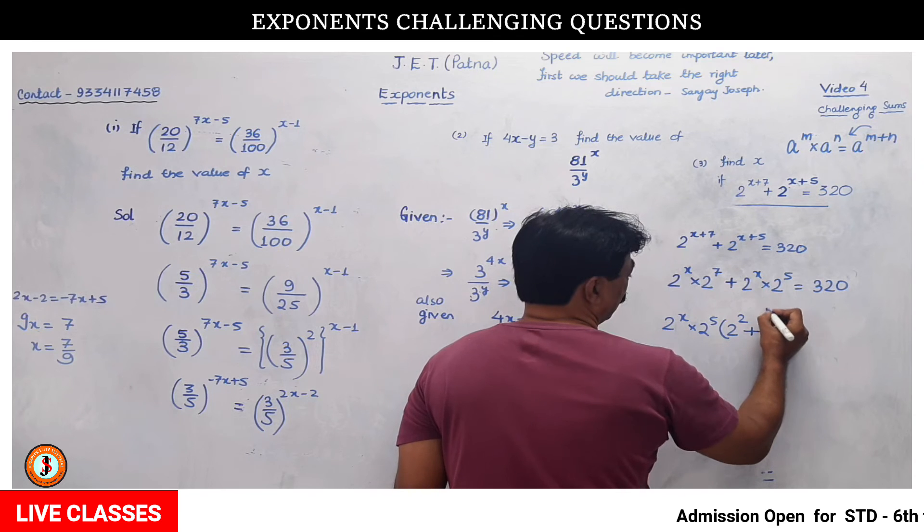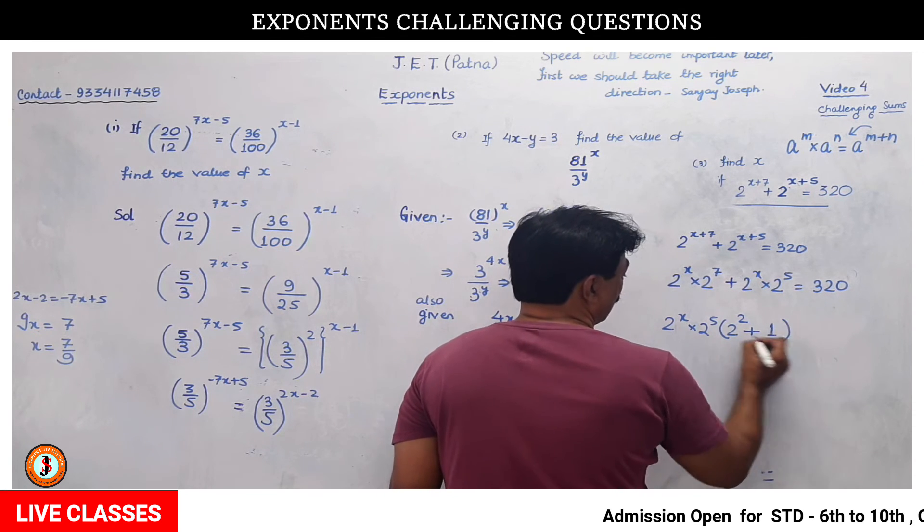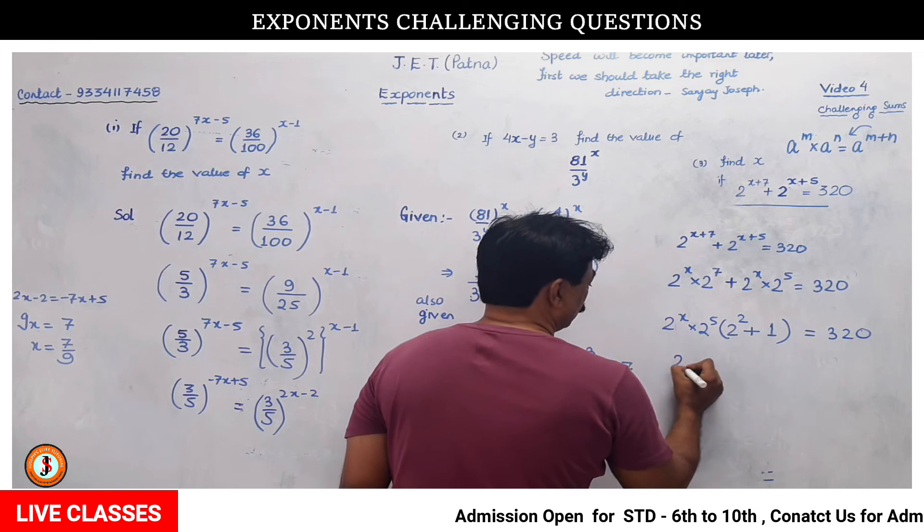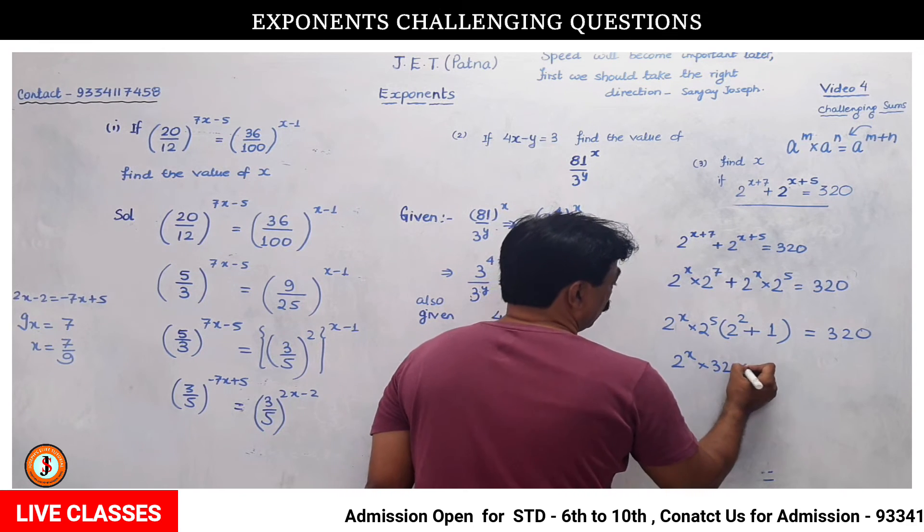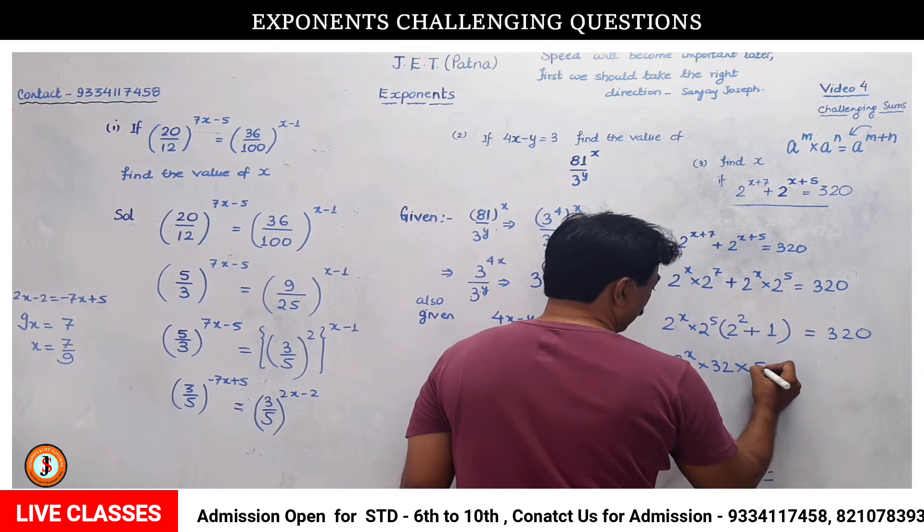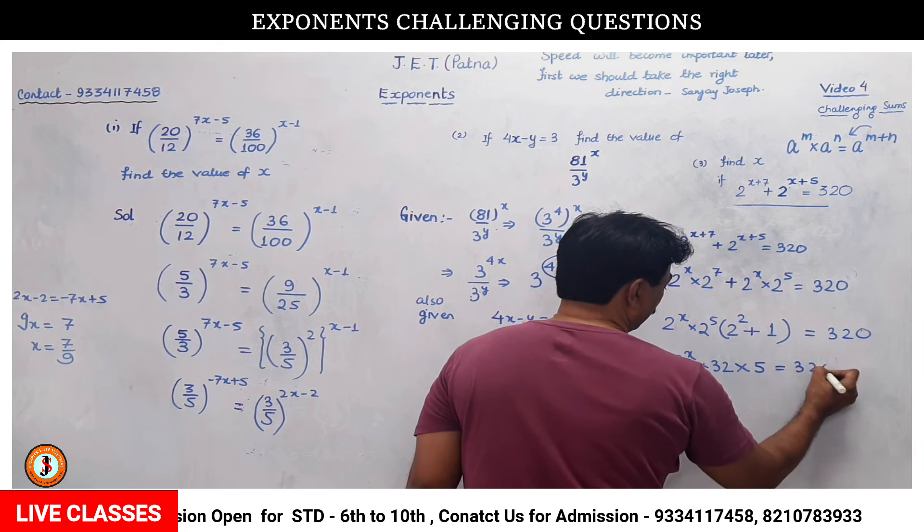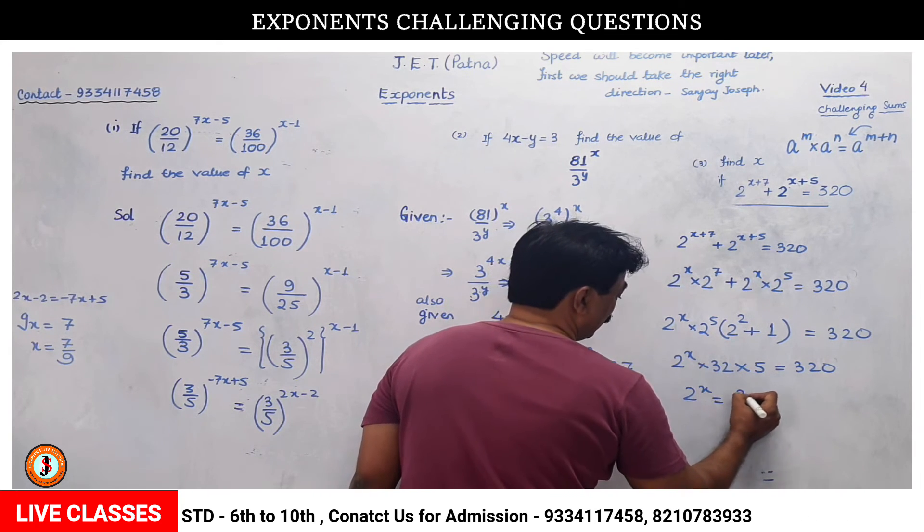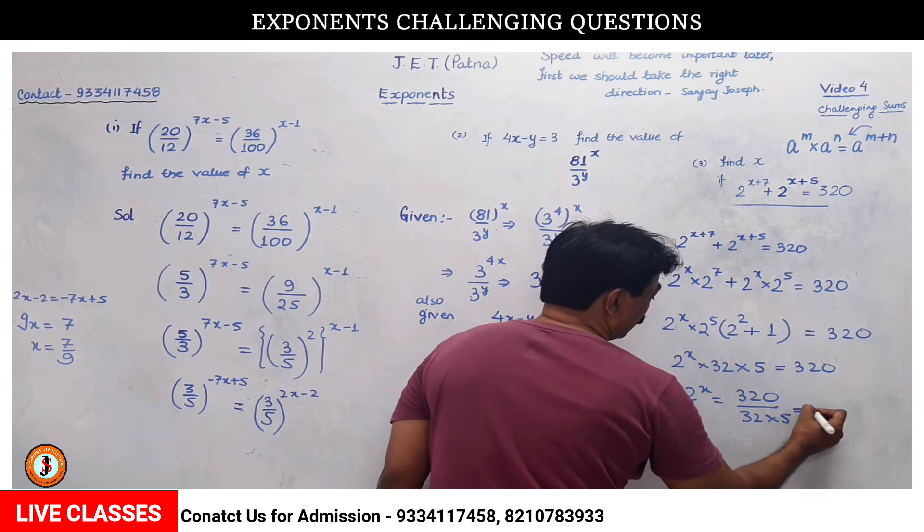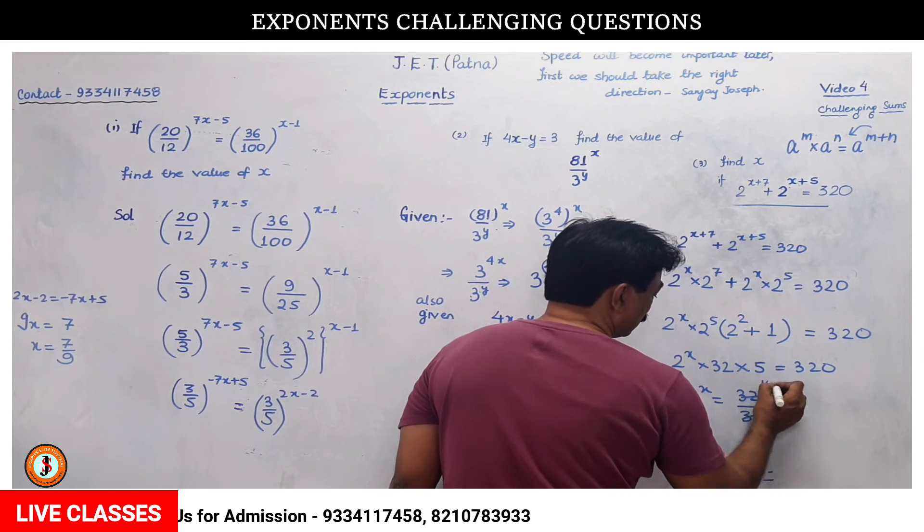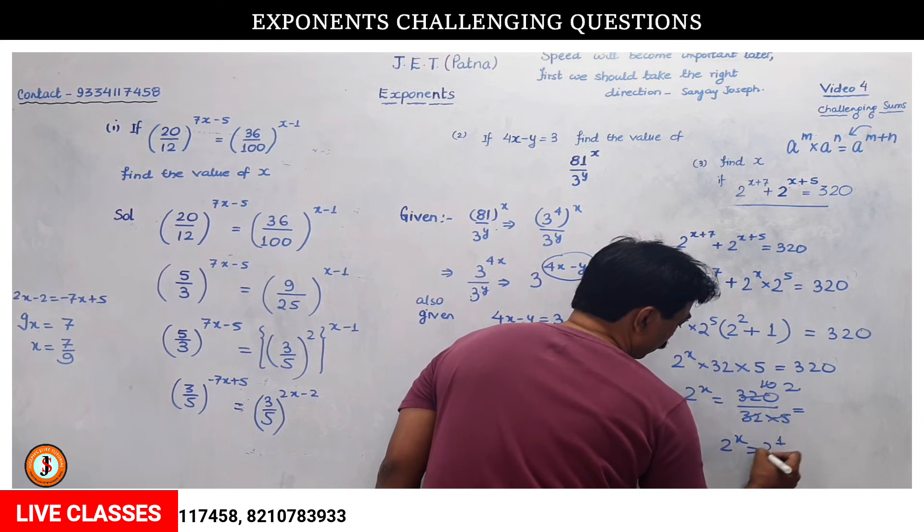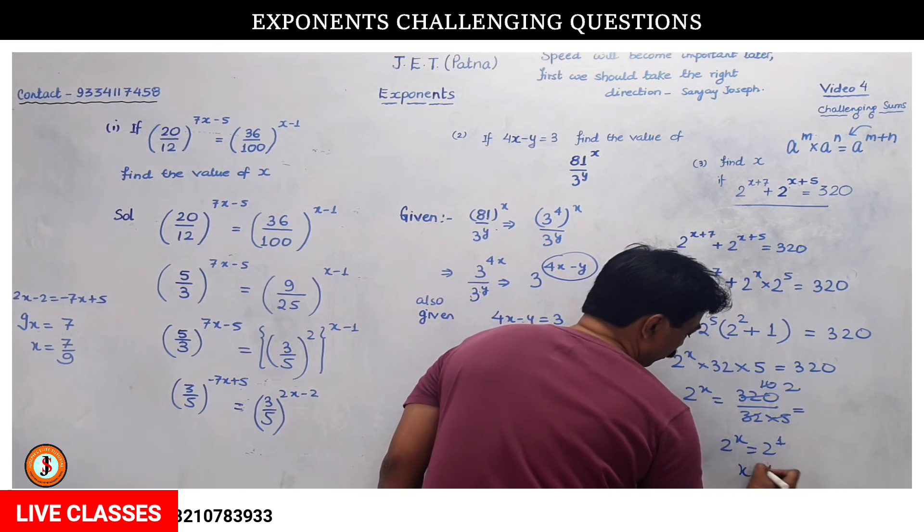Equals 320. The work has become easy. 2 to the power x, 2 to the power 5 means 32, and 2 squared plus 1 is 5, equals 320. So 2 to the power x equals 320 divided by 32 into 5. 32 into 10 cancels to give 5 twice, which means 2 to the power x equals 2 to the power 1, so x equals 1.